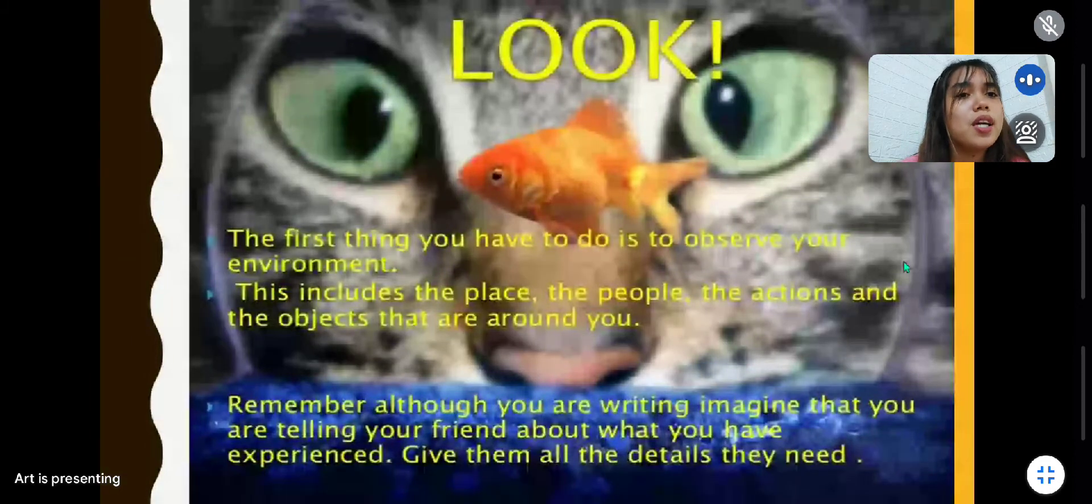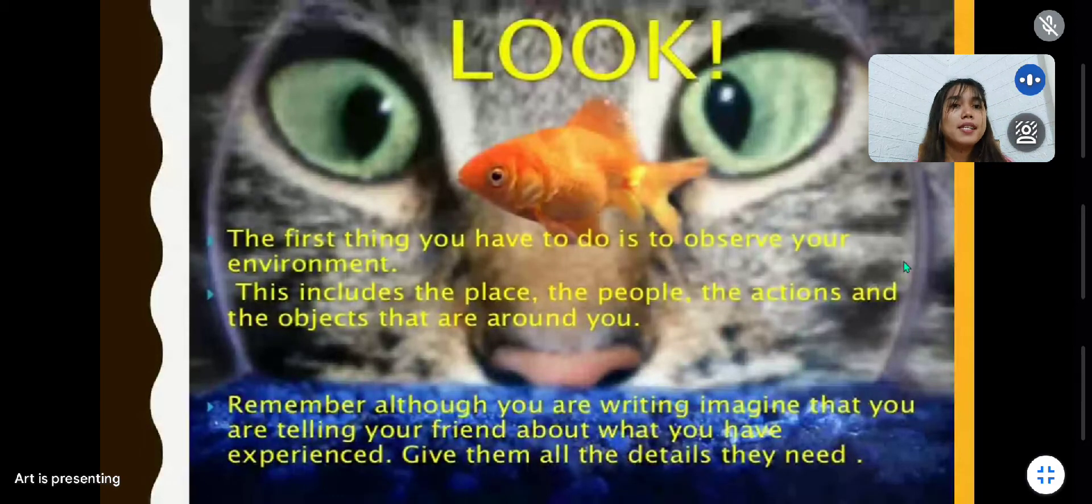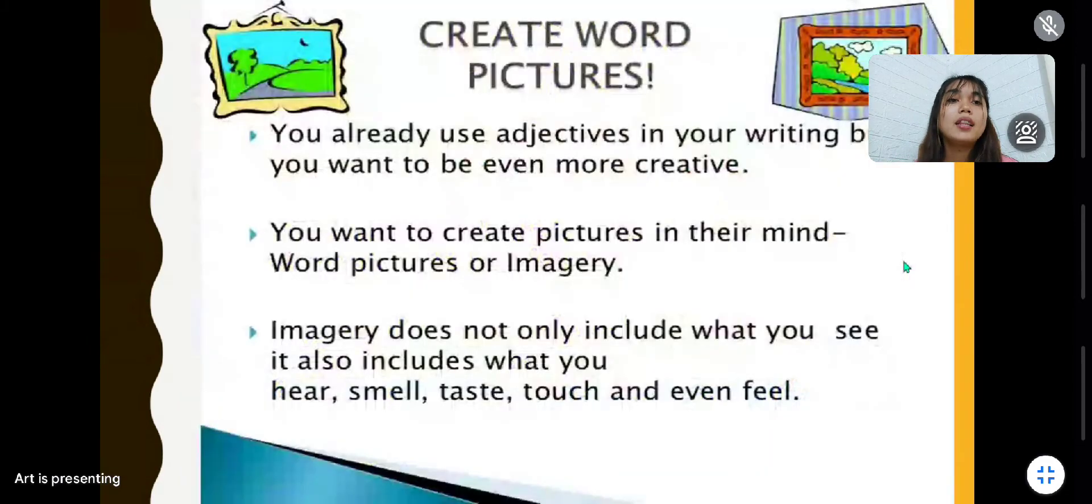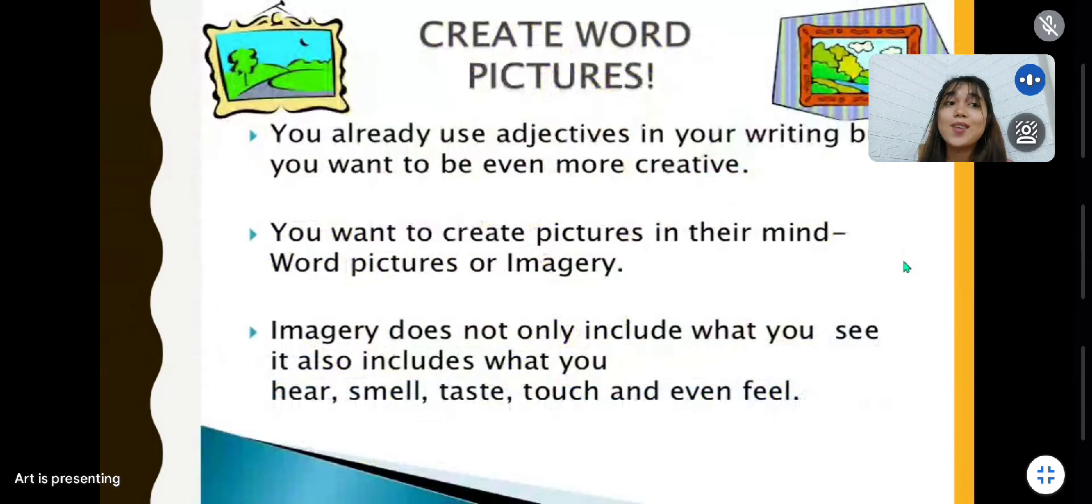In order to describe, if we are describing a place, of course the first thing you have to do is to observe your environment. This includes the place, the people, the actions, and the objects that are around you. Remember, although you are writing, imagine that you are telling your friend about what you have experienced. Give them all the details they need.